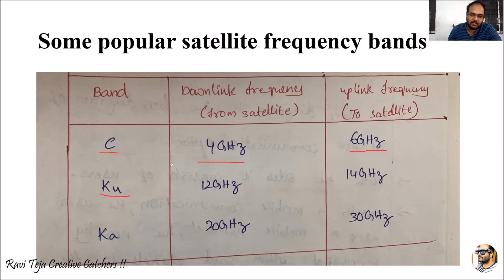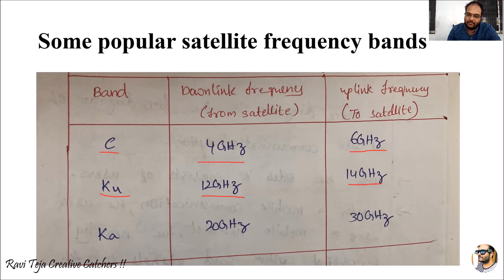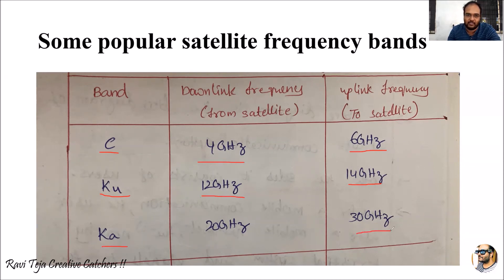For Ku band, the downlink frequency from the satellite is around 12 GHz, and the uplink frequency from the earth station to the satellite is 14 GHz. For Ka band, the downlink frequency is around 20 GHz and the uplink frequency is 30 GHz. These are the frequency bands most popular in satellite communication.